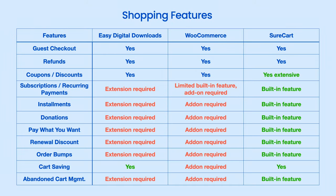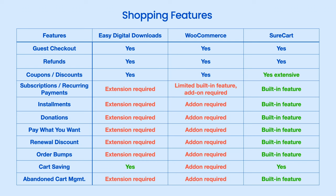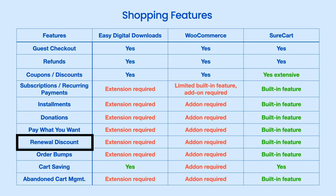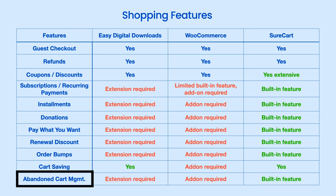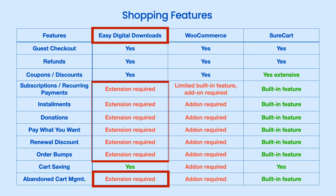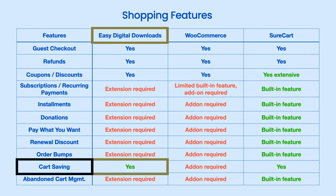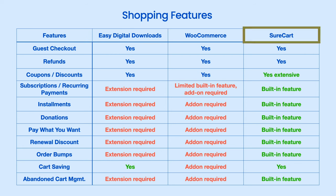When it comes to shopping features, apart from the first three — guest checkout, refunds, coupons, and discounts, which are the same across the board — SureCart has more extensive options for coupons and discounts. For subscriptions, recurring payments, installments, donations, pay-what-you-want, renewal discounts, auto bumps, cart saving, and abandoned cart management, EDD and WooCommerce need extensions or add-ons, except that EDD has cart saving built-in. But for all the rest, in SureCart these are built-in features — and many are even built-in the free version.